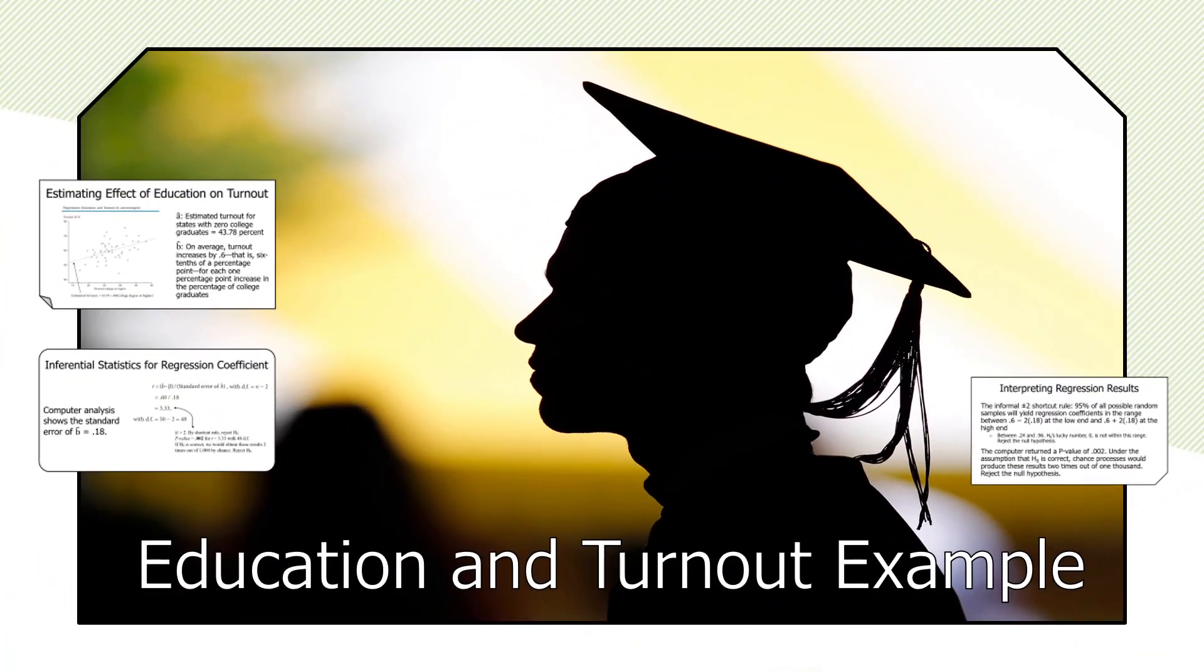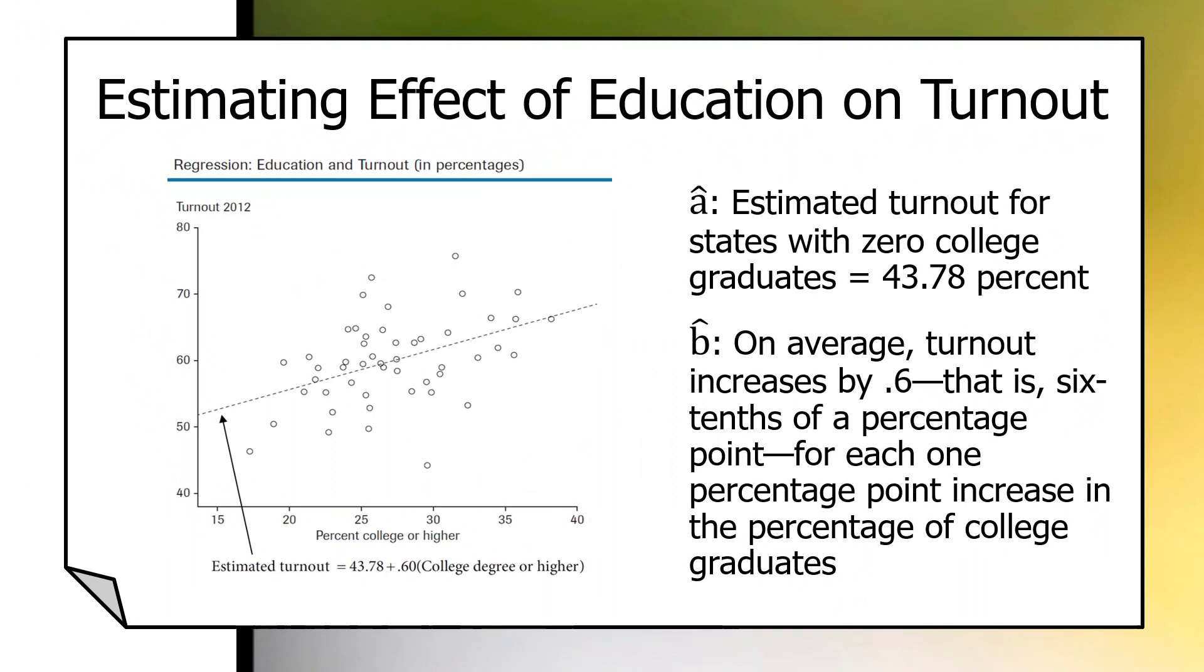And here's the realistic data. This returns us to the scatter plot of states that we looked at in the correlation screencast. Percent college or higher is the independent variable. Turnout in 2012 is the dependent. This representation has a regression line that summarizes this relationship.